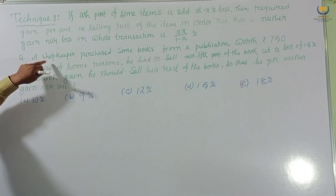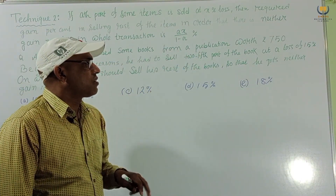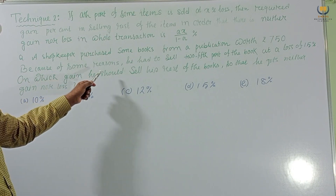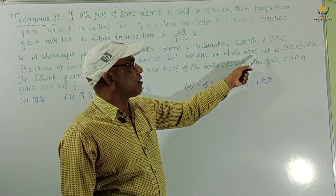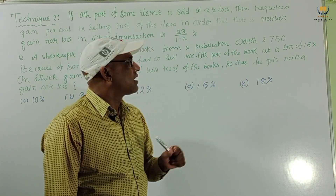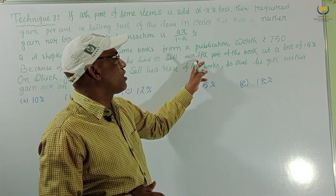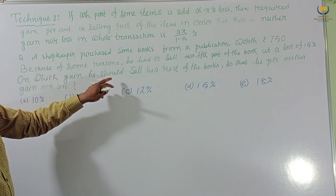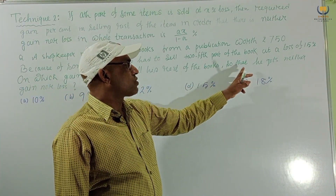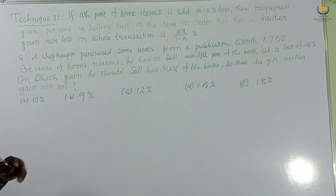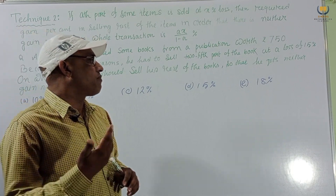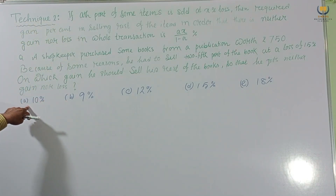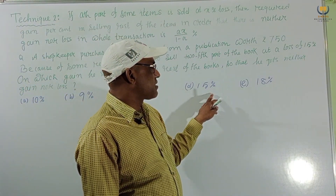One problem: A shopkeeper purchases some books from a publication worth rupees 750. Because of some reasons, he decided to sell two-fifths of the books at a loss of 15 percent. On what gain should he sell the rest of the books so that he gets neither gain nor loss? Options: A) 10%, B) 9%, C) 12%, D) 15%, E) 18%.